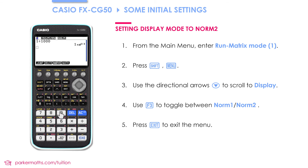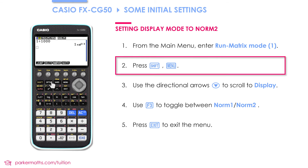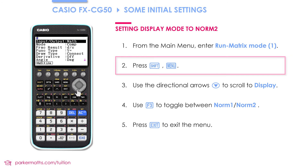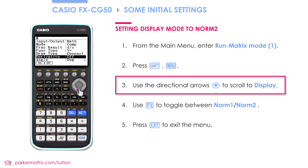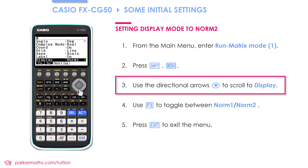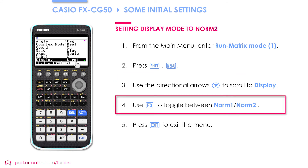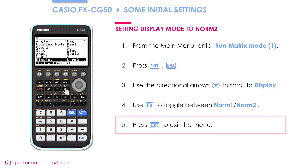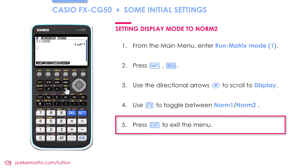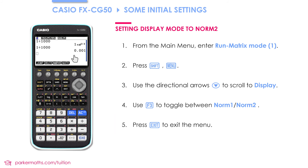To change to norm 2, press shift and then menu. Then scroll down until you reach display. Change norm 1 to norm 2 by pressing F3. Press exit, and if we now do 1 divided by 1000, you'll see we get 0.001.